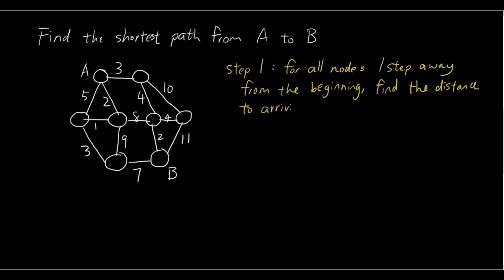Step 1: arrive at the node. So step one is simply we decided that we want to begin at A as stated in the question, and one step away from A we have 5, 2, and 3. So initially we have zero. It takes us 3 steps to get to this node, 2 steps to get to that node, 5 steps to get to that node.